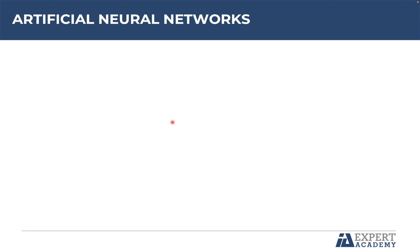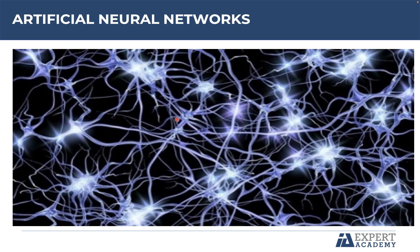Hello and welcome to this lecture where you are going to learn about the biological fundamentals of human neural networks. It is important that you have a basic understanding of this subject because an artificial neural network is related to the way a human neural network works. This image is an example of a human neural network and we are going to discuss three main points.